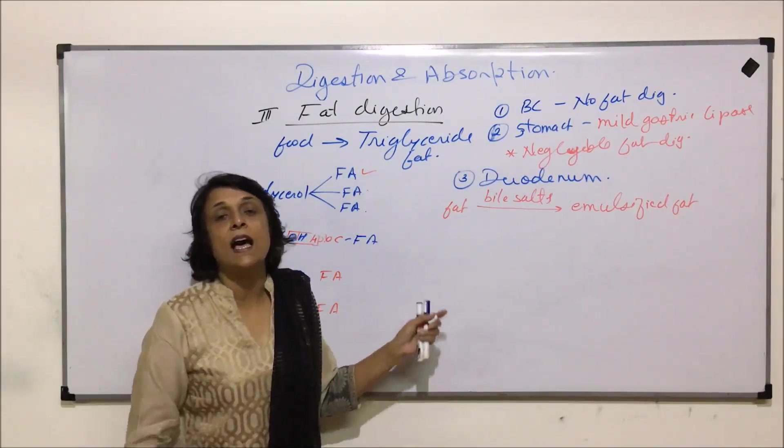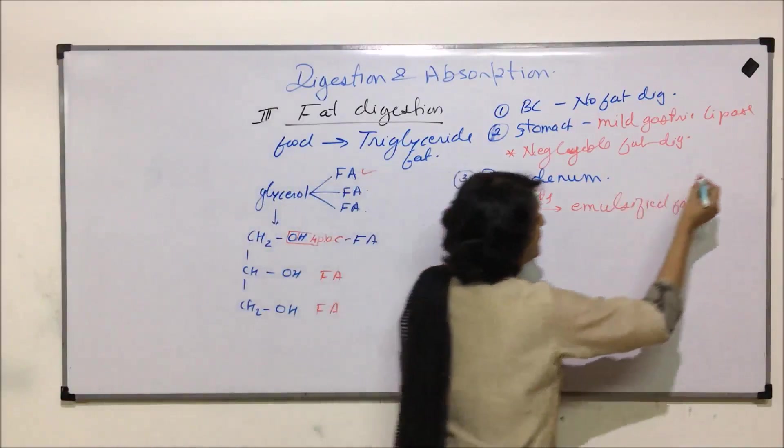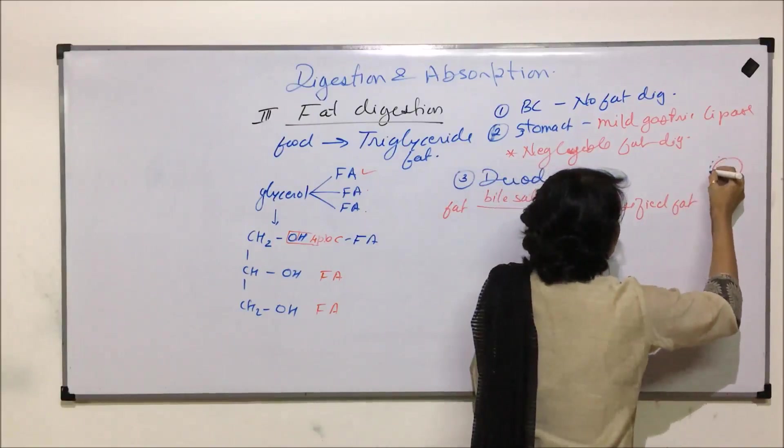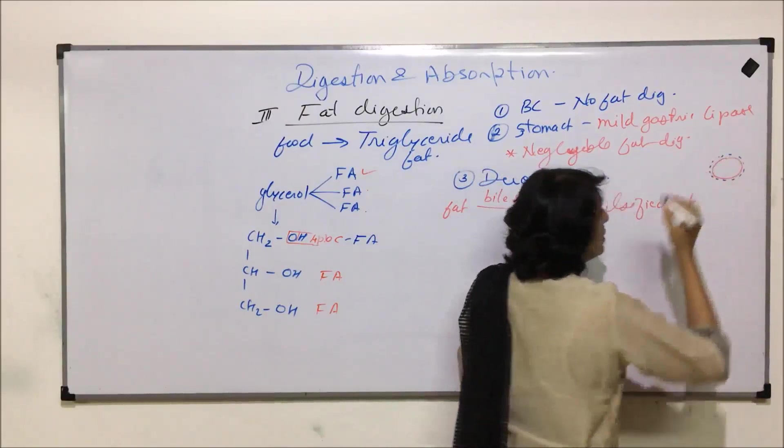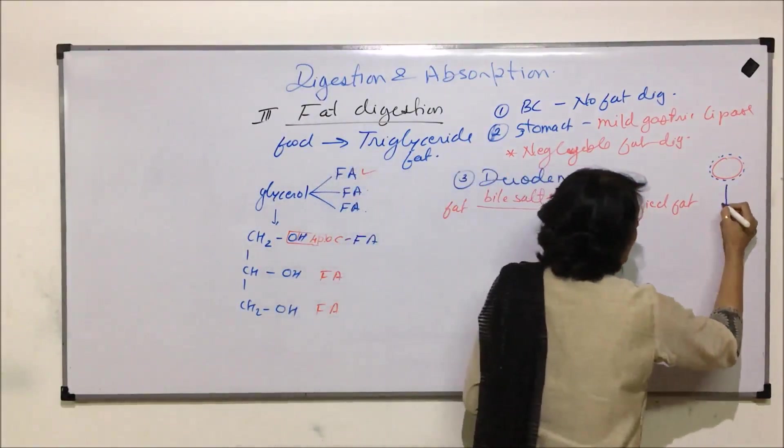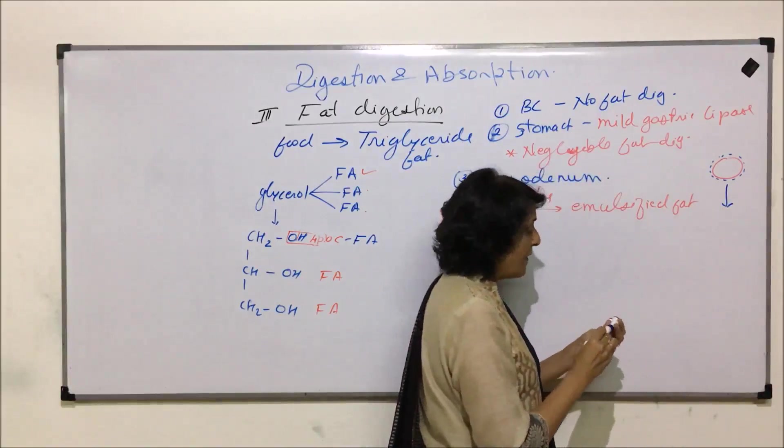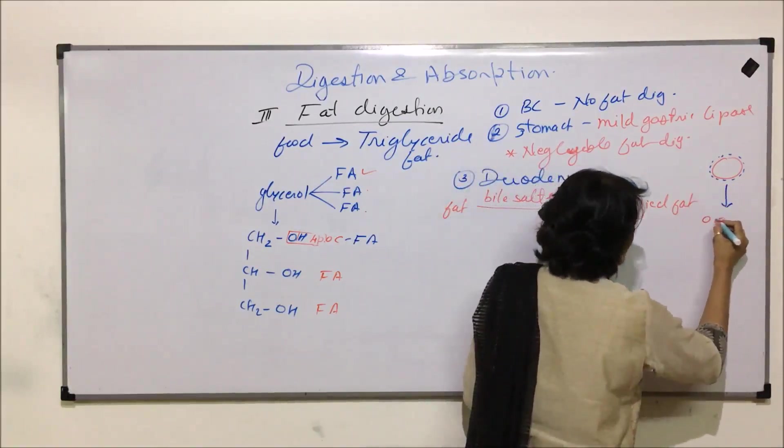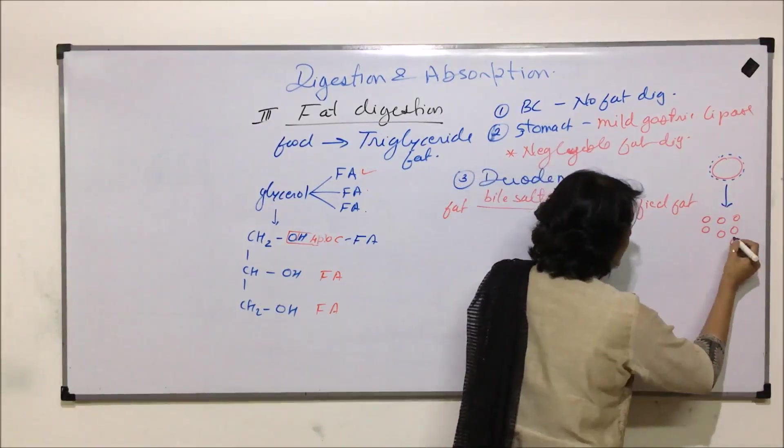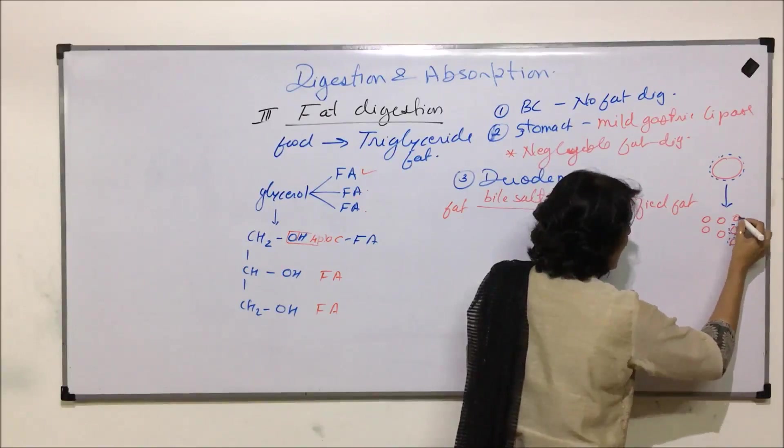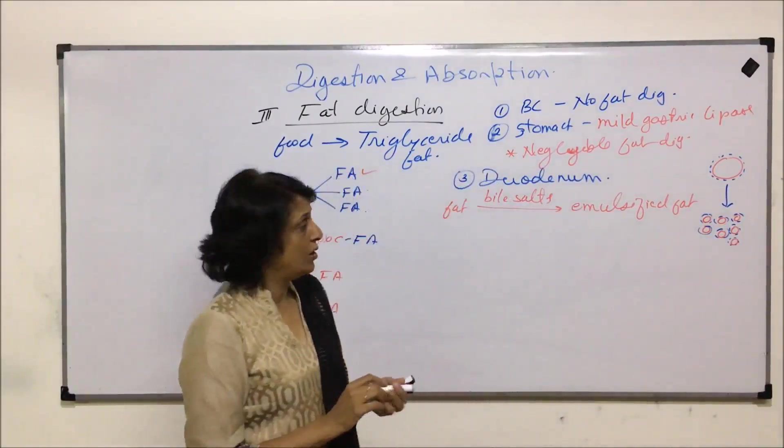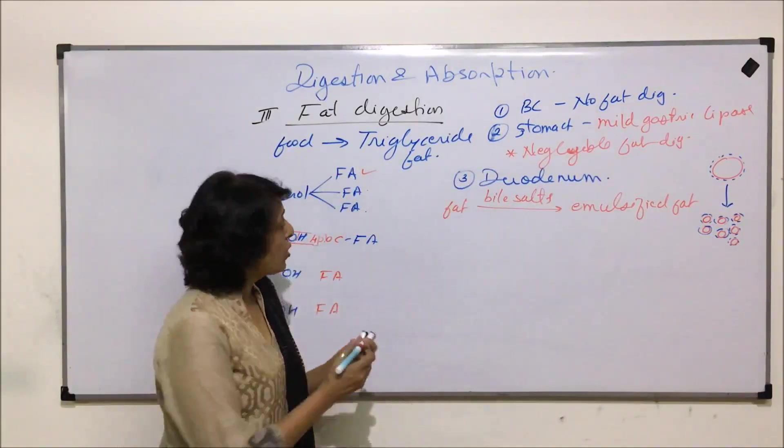Because of this emulsification, these tiny droplets are acted upon by the enzyme. Suppose this is a big drop of fat, then this surface area is available for the action of lipase. Lipase works in aqueous medium. If it gets emulsified, then this bigger drop will be broken down into tiny droplets, and all along its surface the lipase action can work. That is why this emulsification is essential, done by bile salts.